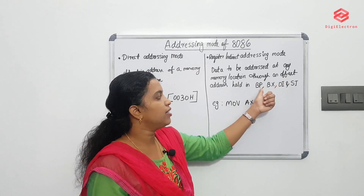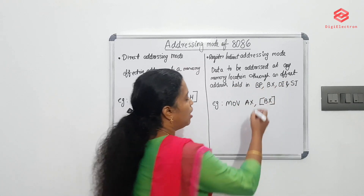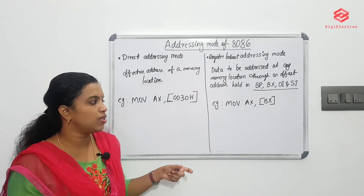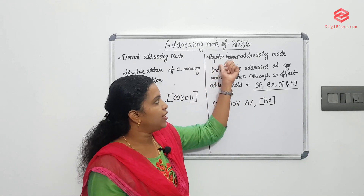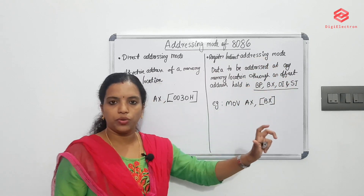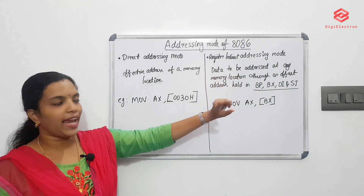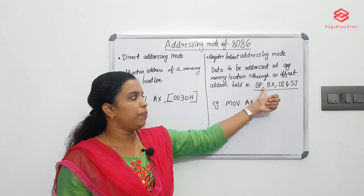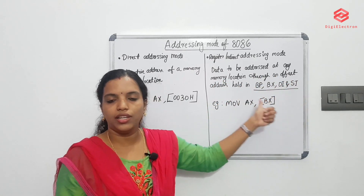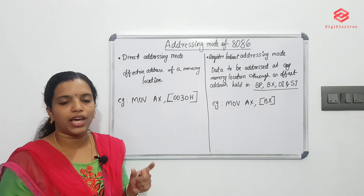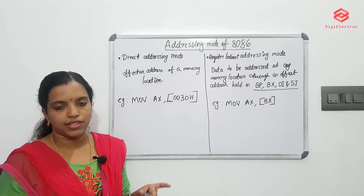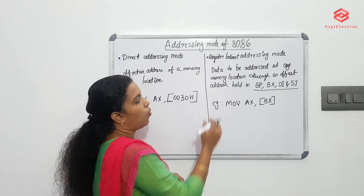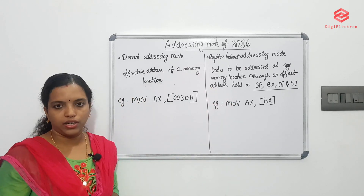In register indirect addressing mode we use four registers: BP, BX, DI, and SI. If we use any of these four registers, we can access any memory location through an offset address — that is register indirect addressing mode. For example: MOV AX, [BX].